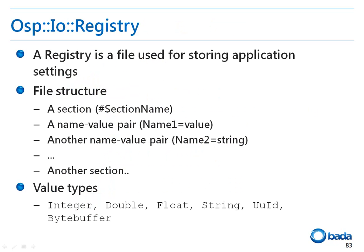Next I'll explain the registry. The registry is generally used to save application settings. The registry file provided by Bada consists of sections, and in each section, name-value pairs can be inserted. The supported value types are Integer, Double, Float, String, UUID, and ByteBuffer.